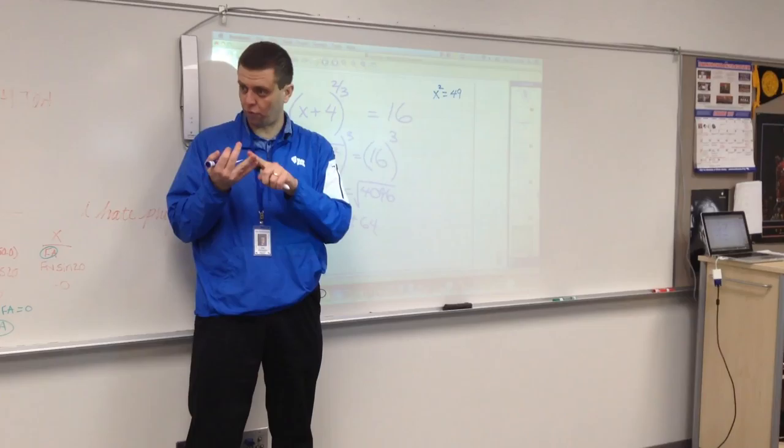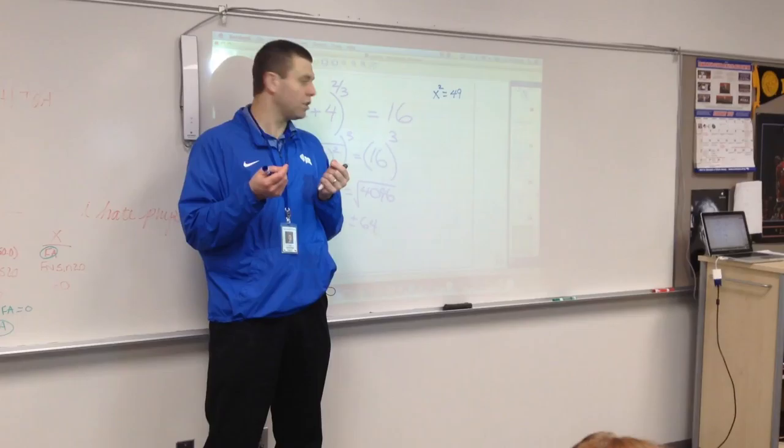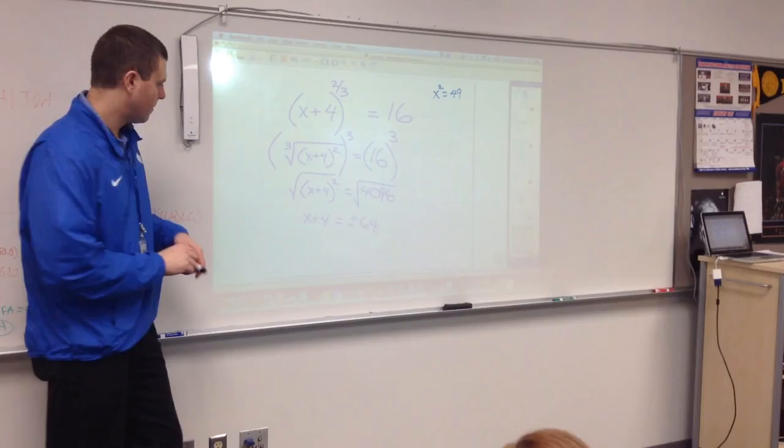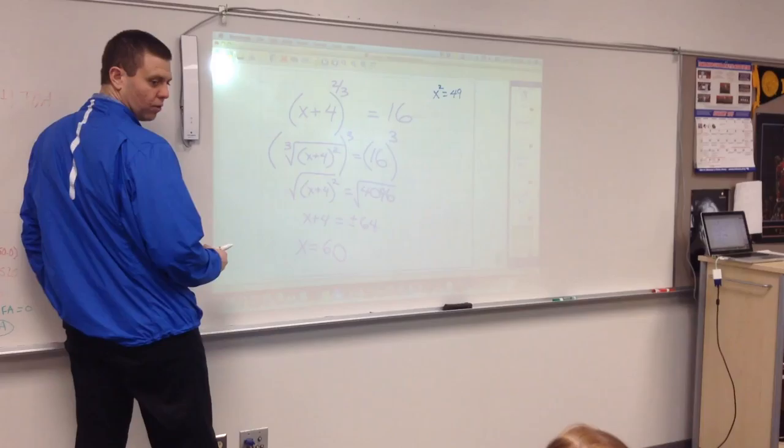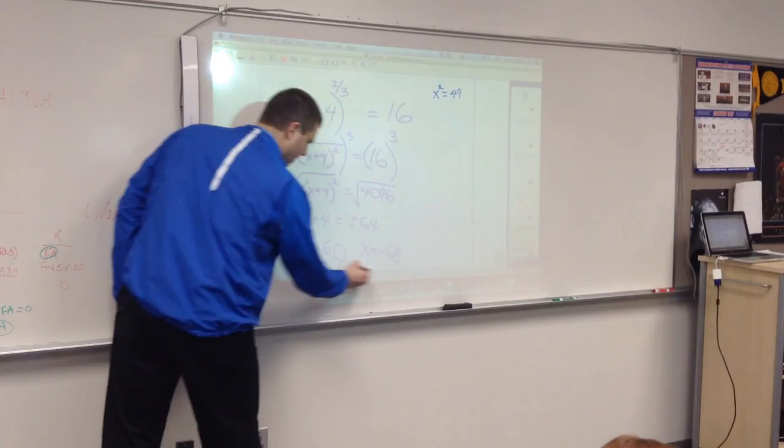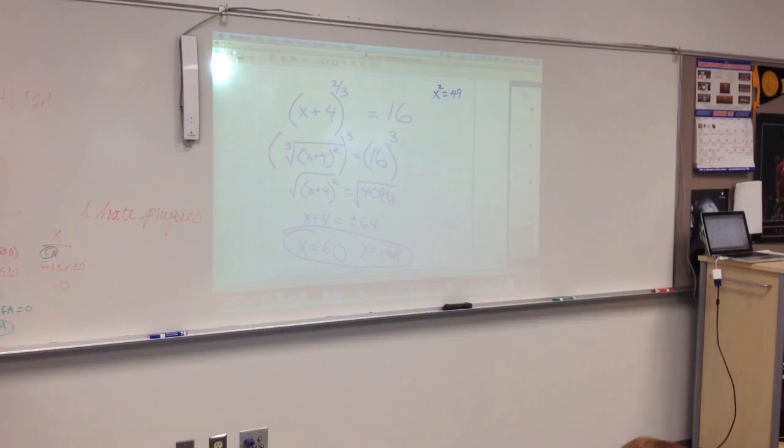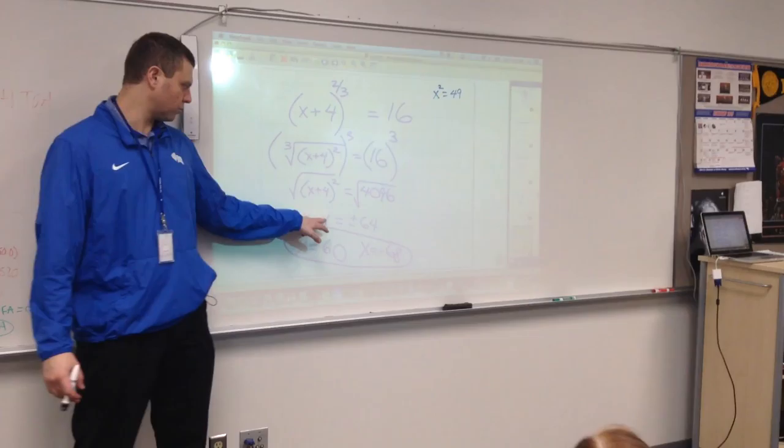And then if you subtract 4 from both of those, what are our two answers? If I subtract 4 from 64, I get 60. If I subtract 4 from negative 64, I get negative 68. I didn't show my work there, but I spoke my work out loud. I just subtracted 4 from the positive 64, and I subtracted 4 from the negative 64 to get my two answers.